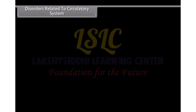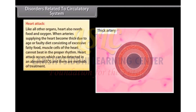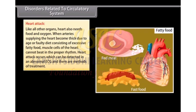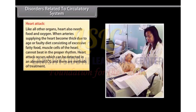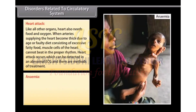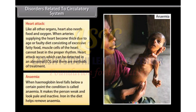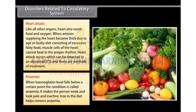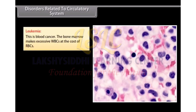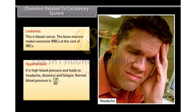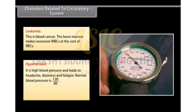Disorders related to the circulatory system: Heart attack occurs when arteries supplying the heart become thick due to age or faulty diet consisting of excessive fatty food, so that muscle cells of the heart cannot beat in the proper rhythm. It can be detected in an abnormal ECG. Anemia occurs when hemoglobin level falls below a certain point, making the person weak and pale. Iron in the diet helps remove anemia. Leukemia is blood cancer where bone marrow makes excessive WBCs at the cost of RBCs. Hypertension, or high blood pressure, leads to headache, dizziness and fatigue. Normal blood pressure is 120/80 and high blood pressure is caused by anxiety also.